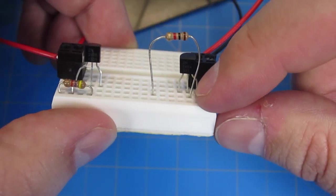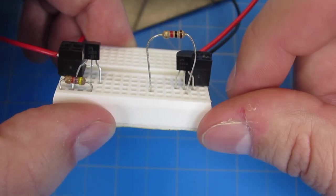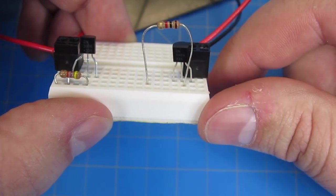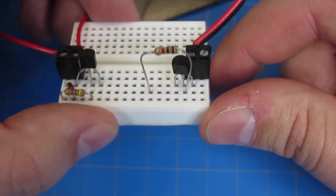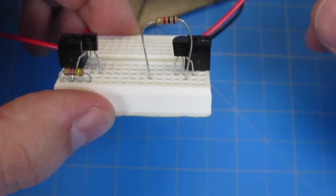Grab your 1000 ohm resistor and put one leg into the same row as the center leg of your transistor, and the other leg just out in the middle of nowhere. Doesn't matter where, just as long as it's away from everything else.